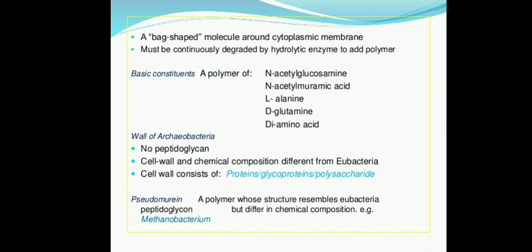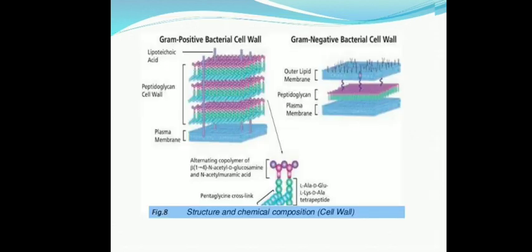This was all about the chemical composition, structure, and function of the cell wall. Now, depending on this chemical composition, bacteria are classified into two groups: one is Gram-positive bacteria and the other is Gram-negative bacteria. How these bacteria are differentiated into two groups depending on the cell wall composition, that we will study in our next lecture.